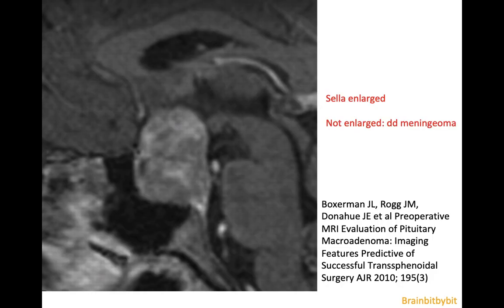When I look at the sagittal images in patients with a sellar and suprasellar mass, the first thing I look for is whether there's enlargement of the sella. If the sella is enlarged, it's most likely a macroadenoma. If the sella is not enlarged, you can think of other pathologies such as a meningioma.